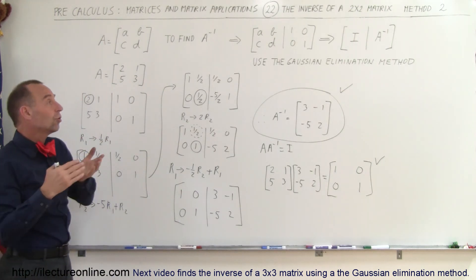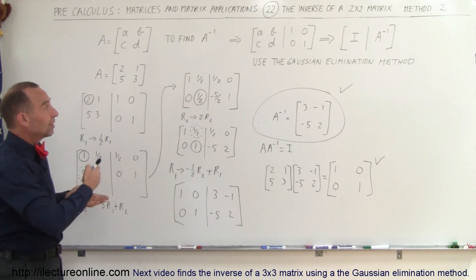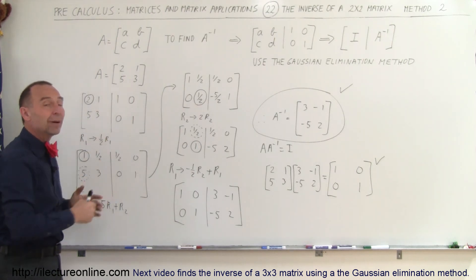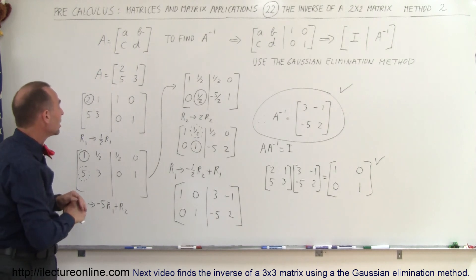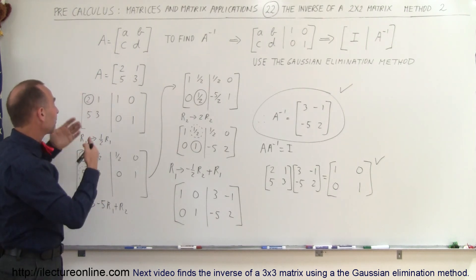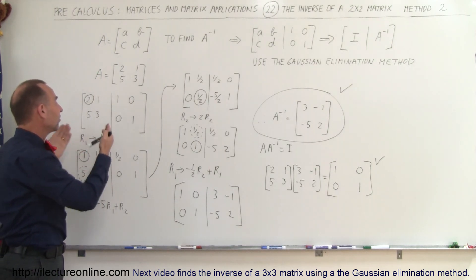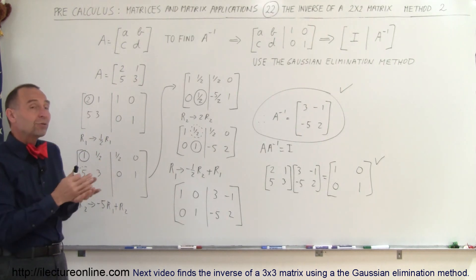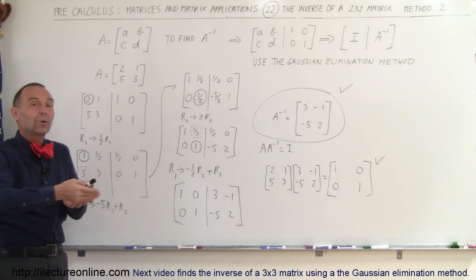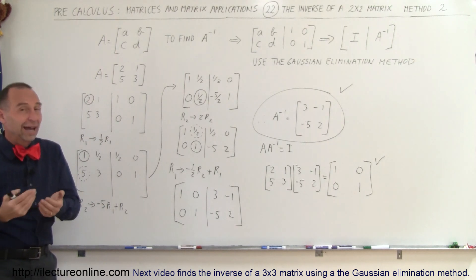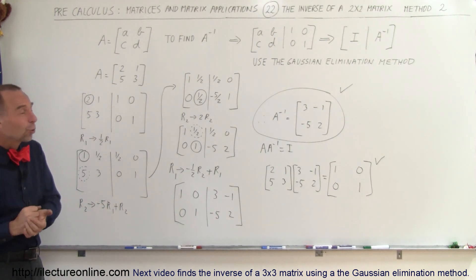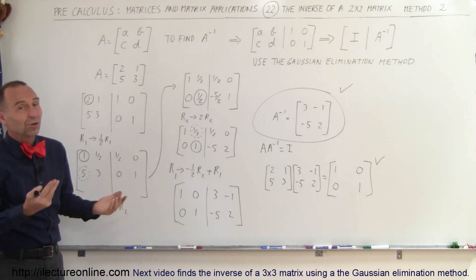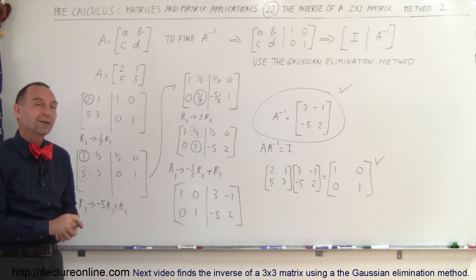That is the more general method. Notice that the Gaussian elimination method can be used for any size n-by-n matrix. So for 3x3, 4x4, or 5x5 matrices, this is the best method to use. For a 2x2 matrix, you can use either this method or the one from the previous video. The previous method is quicker for 2x2, but this is the more general approach — so take your pick.